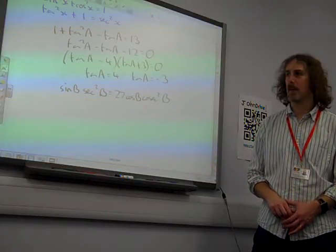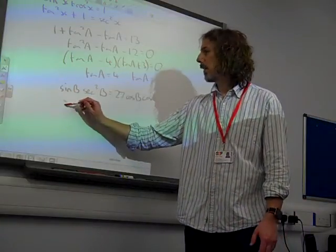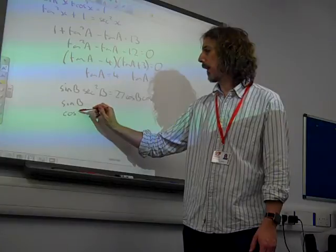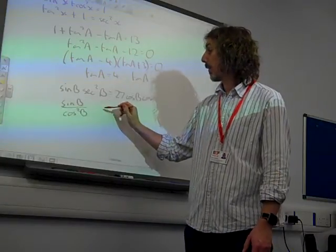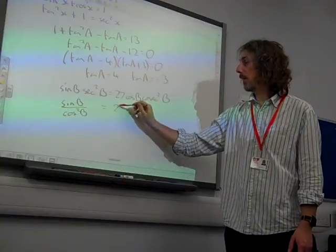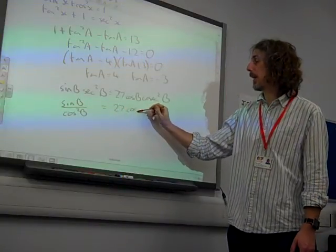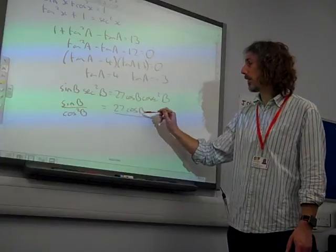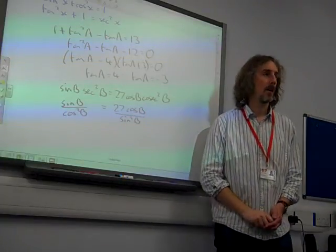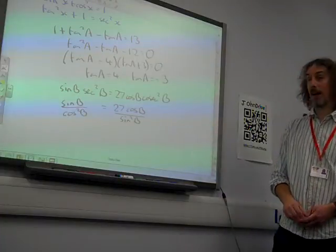See how that pans out. This is sin B times 1 over cos²B, isn't it? And this is 27 times cos B over sin²B, because cosec is 1 over sin. So it's looking like that.